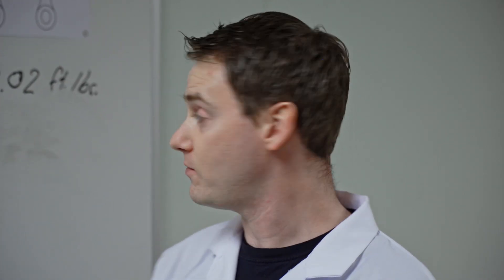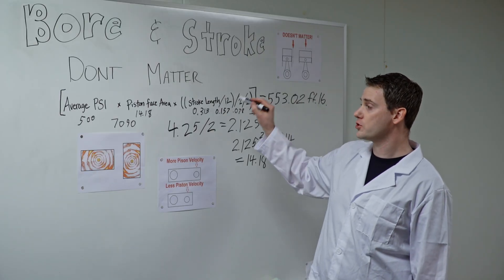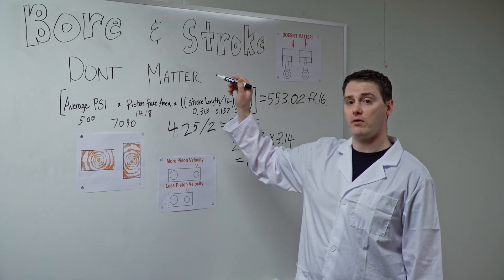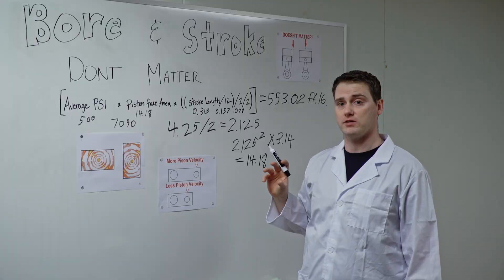Not bad. Our little 427 makes 553 foot pounds of torque. But here's where things get interesting. What if we swap our stroke and our bore to get the same 427 cubic inches? Does this number change? Let's find out.